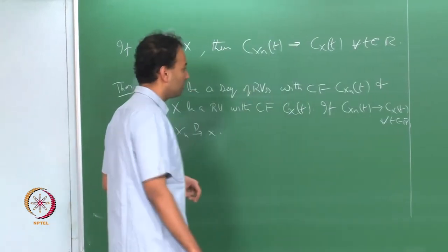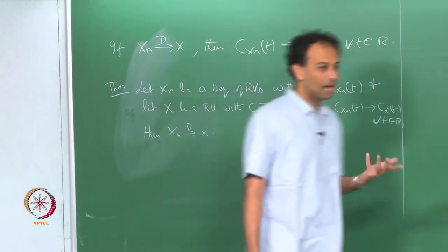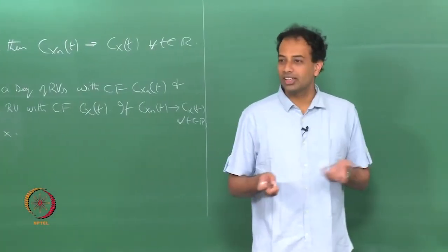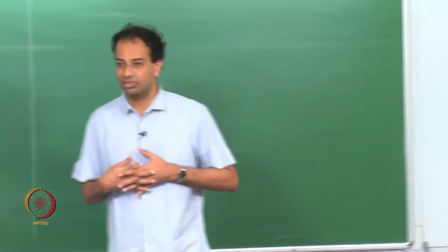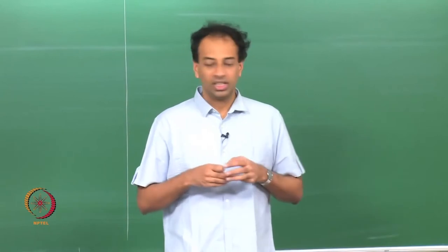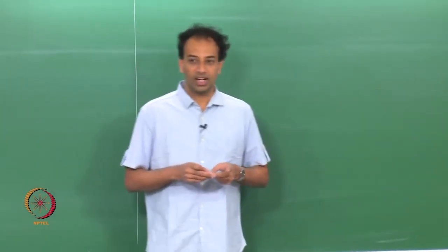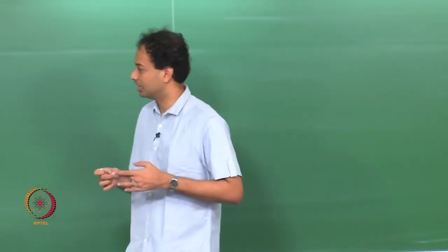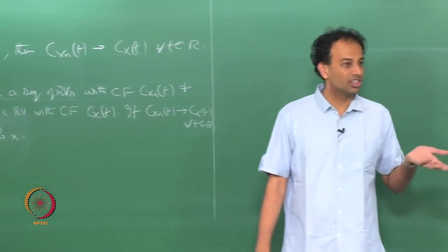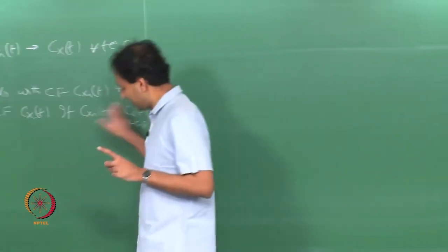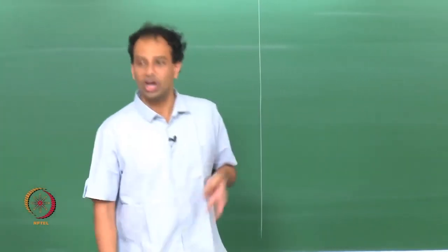The catch is that you may have the sequence of characteristic functions converging to some function of t which is not a valid characteristic function. A characteristic function must satisfy three defining properties: the absolute value condition, uniform continuity, and being a non-negative definite kernel. If even one of these is not satisfied by the limit function, there is no question of convergence in distribution. However, if the limit is a valid characteristic function, then you have convergence in distribution.